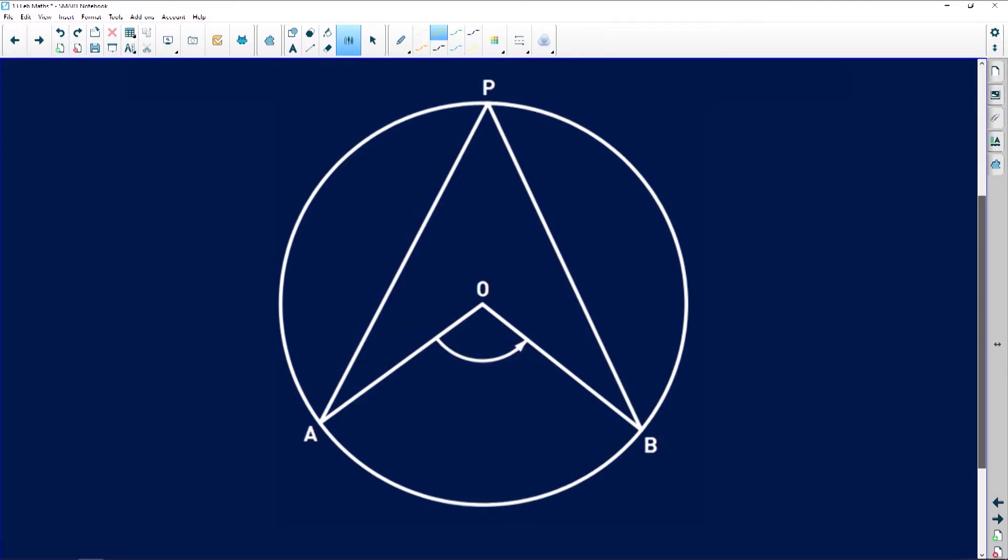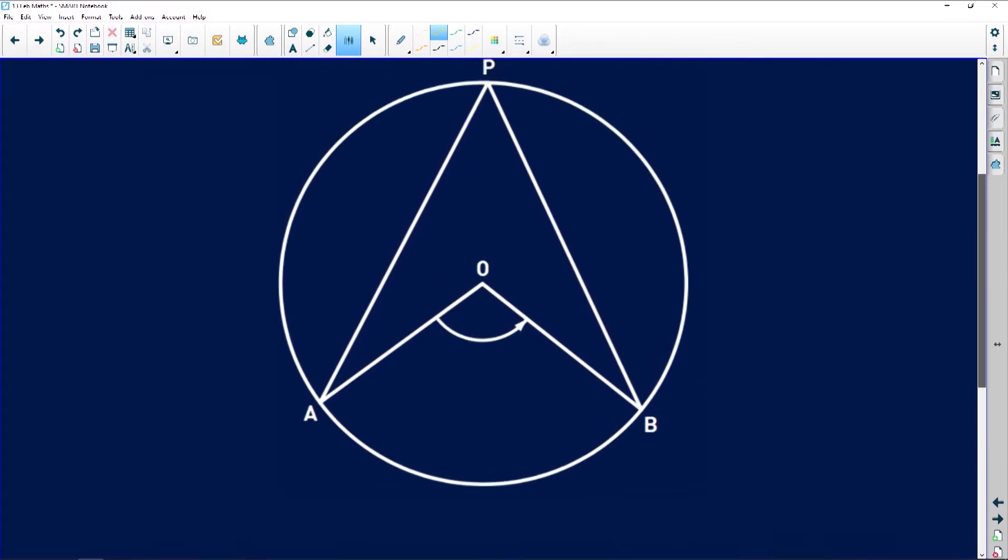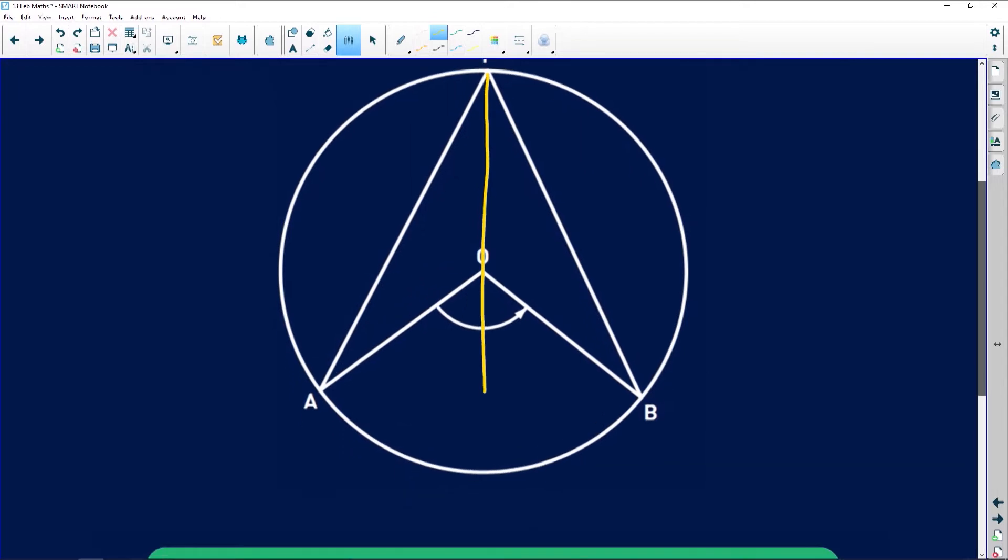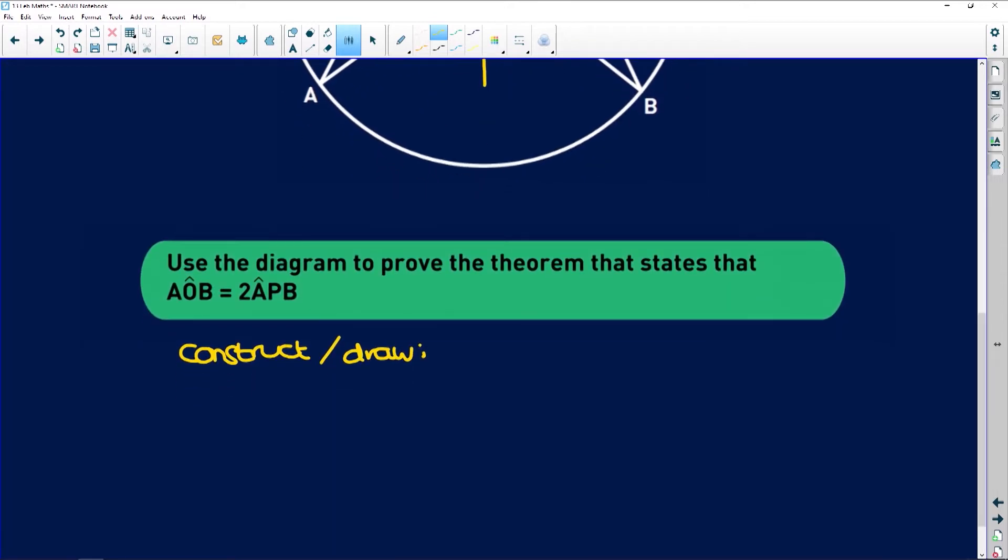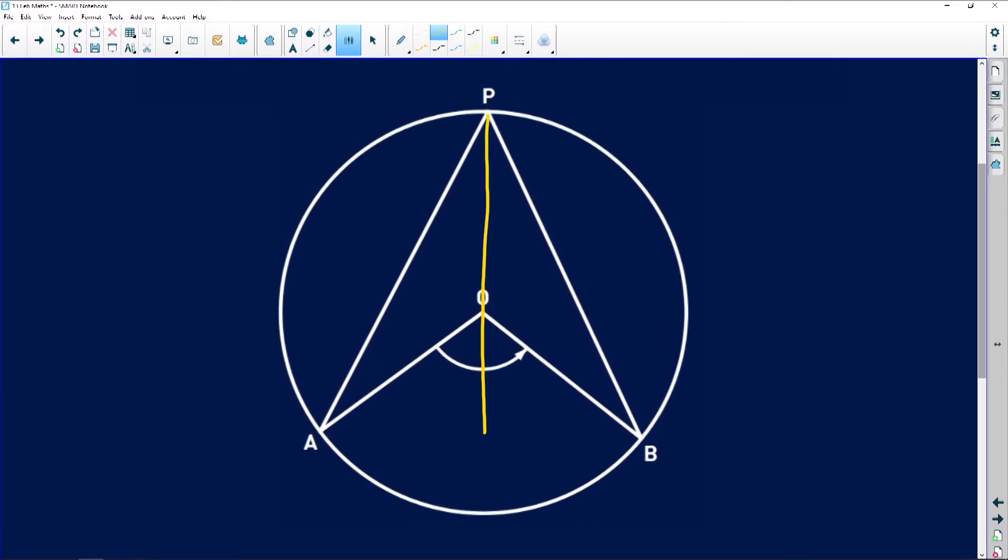So guys, more often than not with a proof, you're going to need to construct. So firstly, we say construct or draw radius PO produced to, let's say, point Q. So what that means is you join radius PO and you extend it to point Q.